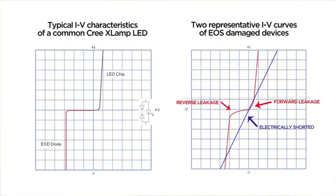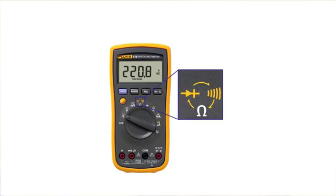Reverse leakage can be measured by supplying minus 5 or minus 10 volts DC and measuring the current. If the equipment is not available to perform these types of measurements, you can use the resistance or diode function of a multimeter and compare the suspect device results to that of a known good device.